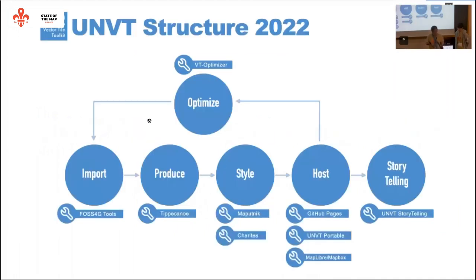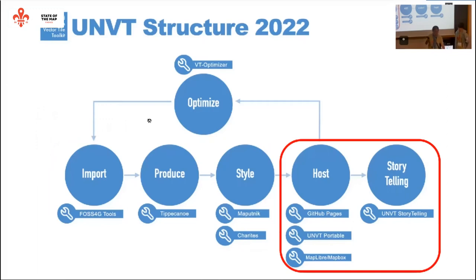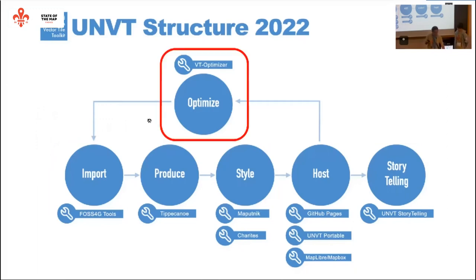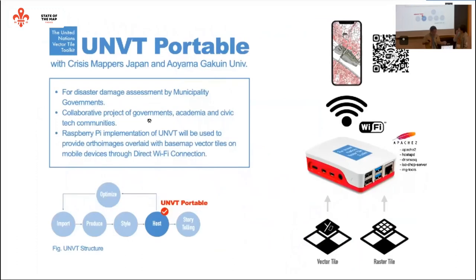UNVT is a kind of open source geospatial tools and components — the vector tile toolkit. To make a vector tile data set, the process involves importing, producing, and styling. You can use typical tools to make vector tile data, and map techniques like Maputnik or Charites to define style data. We can also host vector tile data with a storytelling tool, and sometimes optimize it. This is the complete UN Vector Tile structure in its latest version. Today we want to share about only the hosting process.